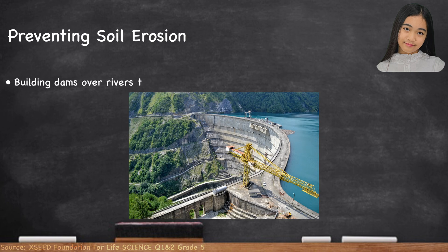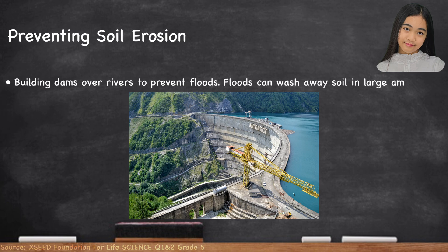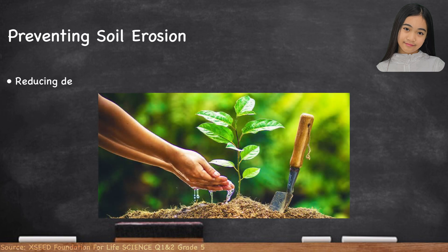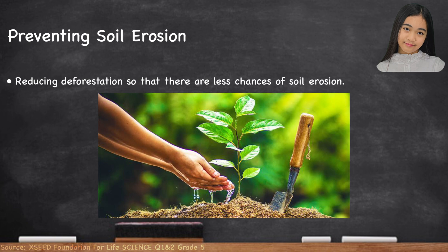Building dams over rivers helps to prevent floods, which can wash away soil in large amounts. Reducing deforestation ensures there are fewer chances of soil erosion.